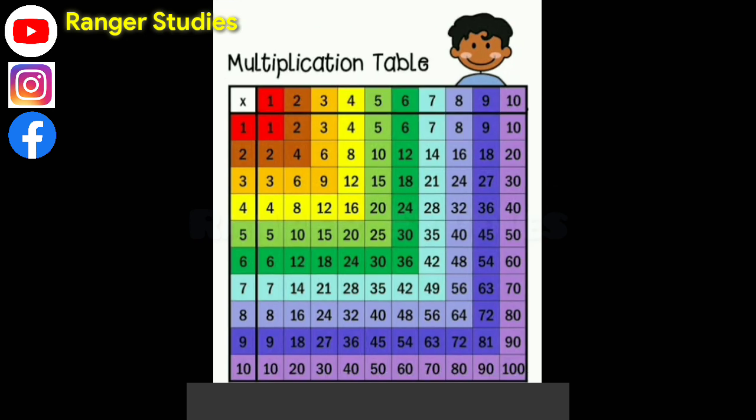6 1s are 6, 6 2s are 12, 6 3s are 18, 6 4s are 24, 6 5s are 30, 6 6s are 36, 6 7s are 42, 6 8s are 48, 6 9s are 54, 6 10s are 60.